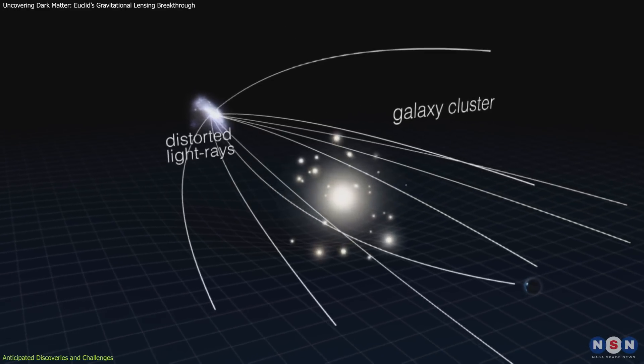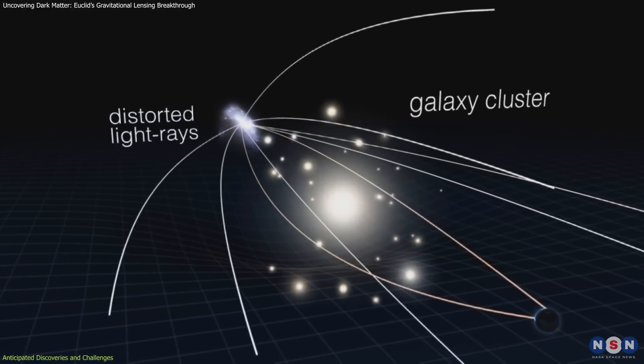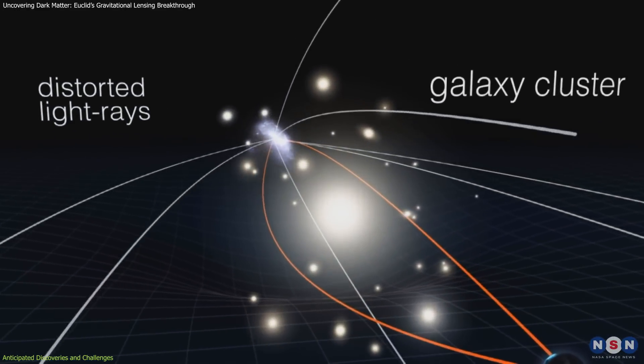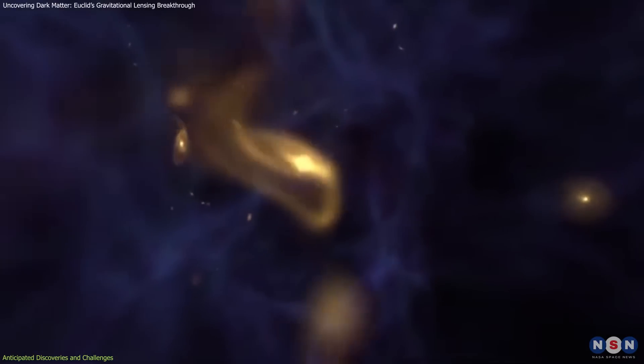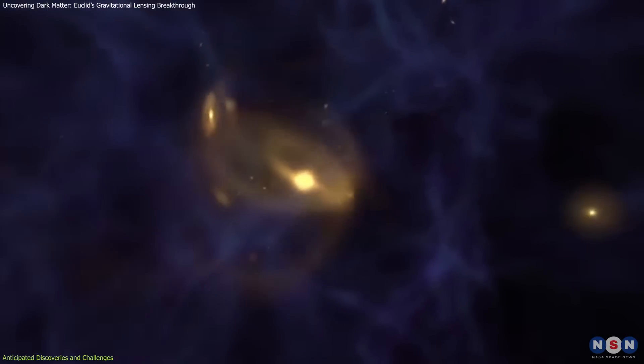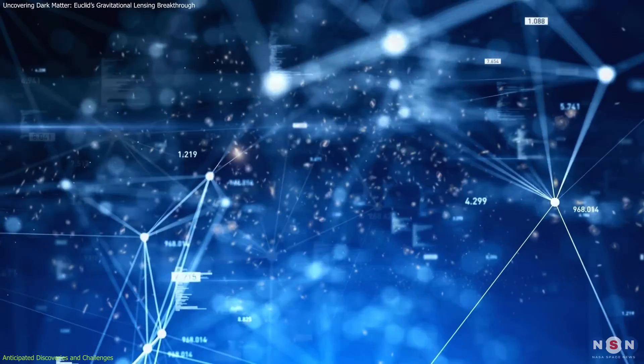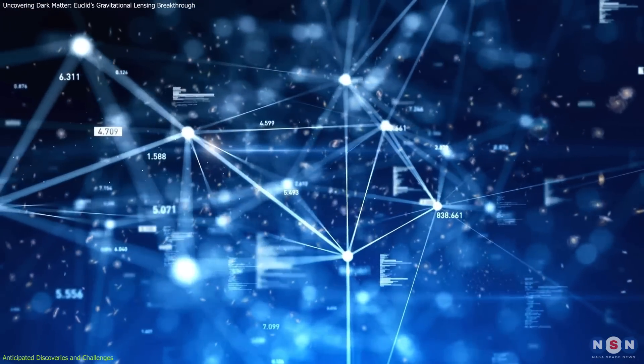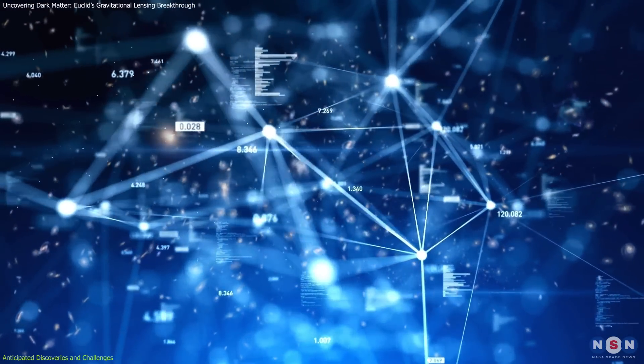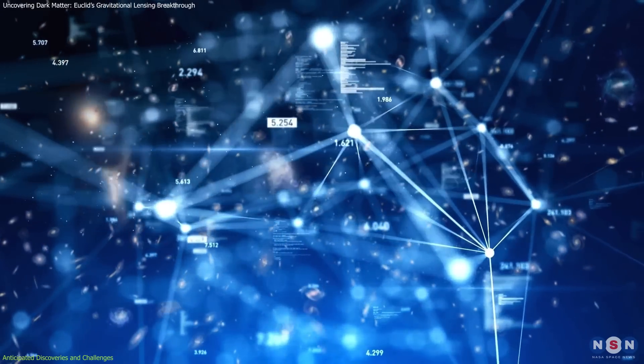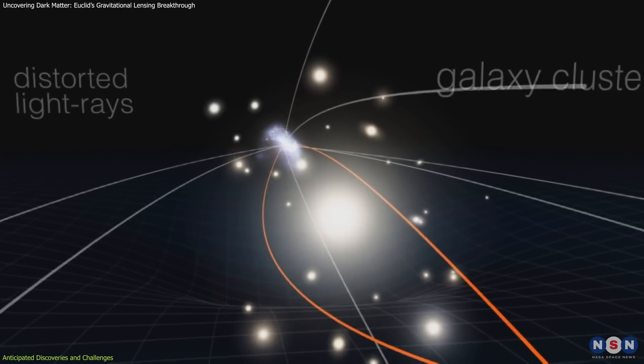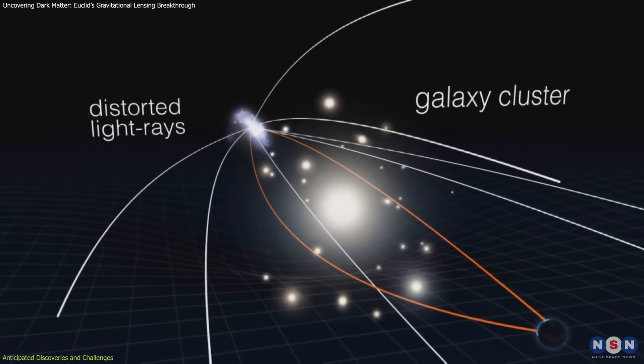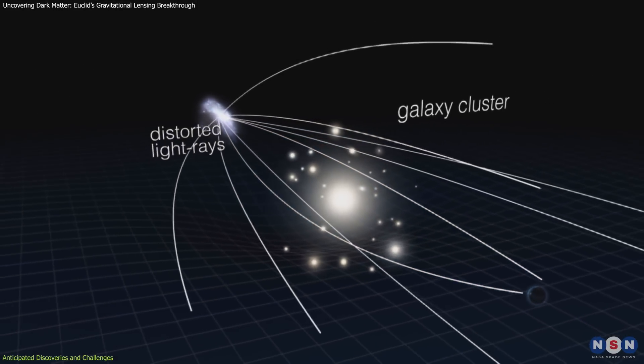Distinguishing true gravitational lensing events from other phenomena is a key obstacle. Galaxy mergers, interactions, and even instrumental noise can produce features that mimic lensing. This complexity necessitates robust detection algorithms capable of isolating genuine lenses from false positives. Furthermore, accurately interpreting lensing data requires precise models of the lensing mass and the light source, adding to the analytical challenges.